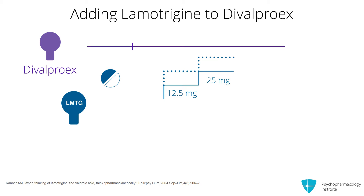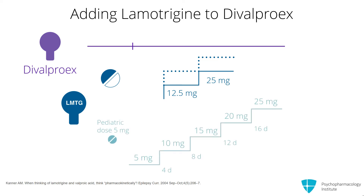If you want to be extremely cautious — and I think there's reason to — remember you're trying to prevent benign rashes as well as the dangerous Stevens-Johnson syndrome rash. To be really cautious, you could start with the 5 mg pediatric dose and go up by one pill every four days. That's slightly slower but much smoother, starting at a much lower dose. So if I have any concerns at all when adding lamotrigine to divalproex, I'll do it that way.